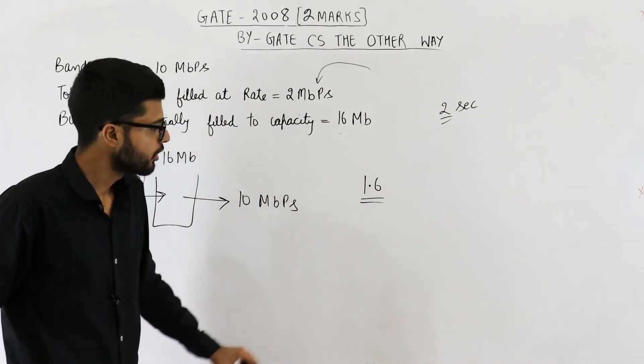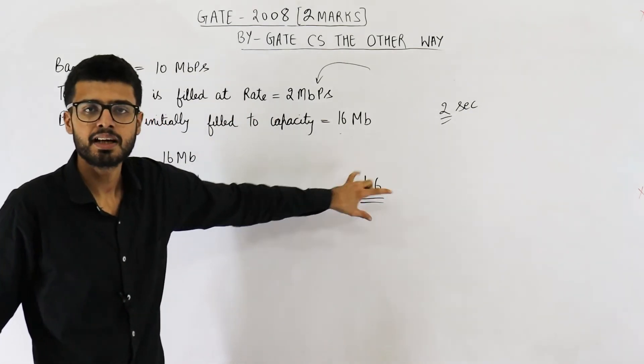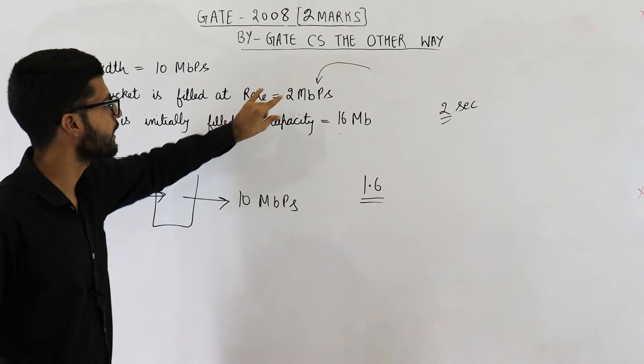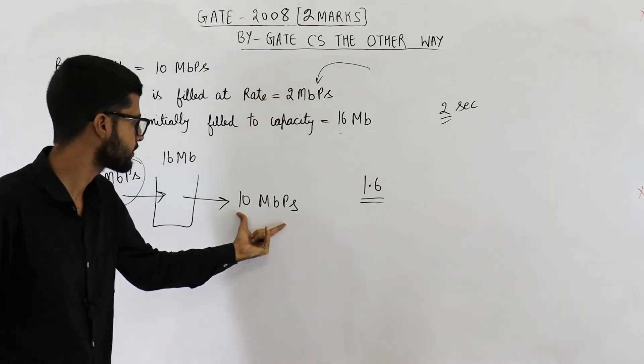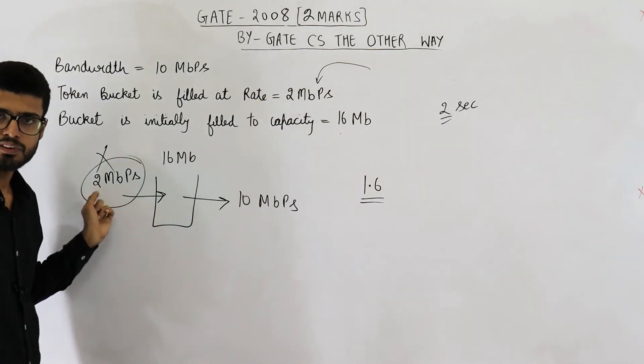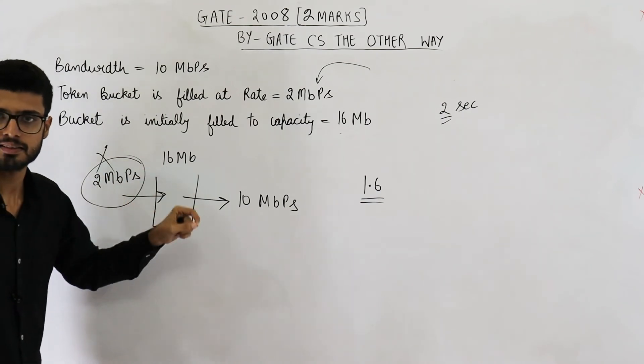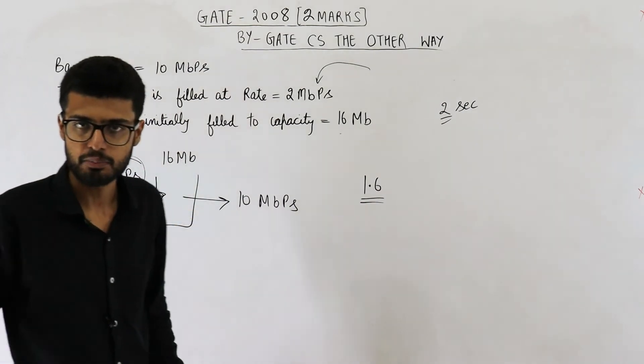But the thing is, for these 1.6 seconds, also new tokens are being added at this rate. So you have to consider this one as well as this one. If we analyze both of these things at the same time, the effective rate is 8 Mbps.